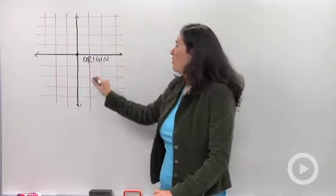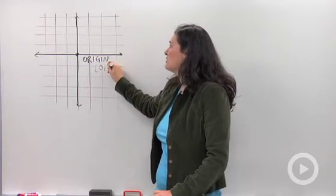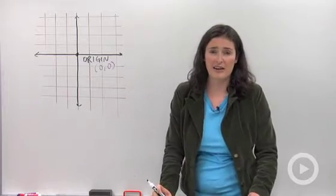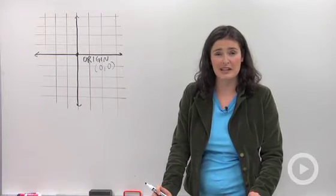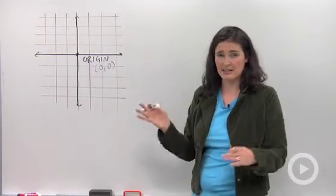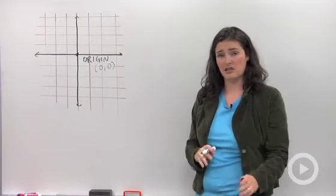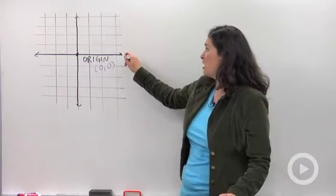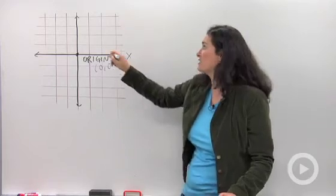And we label it with the coordinates zero, zero. You probably already know that the first number represents your x value, your side to side. The second number represents your y value, that's your up and down. So we call this the x-axis, the horizontal axis. We call that vertical part the y-axis.